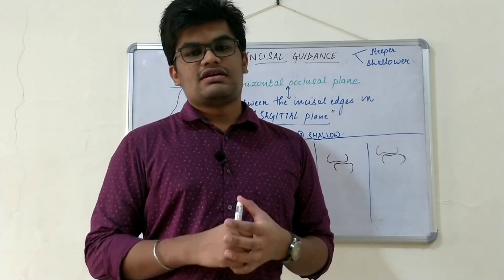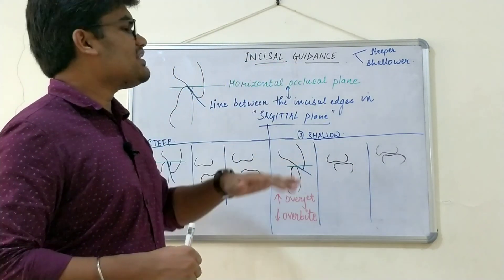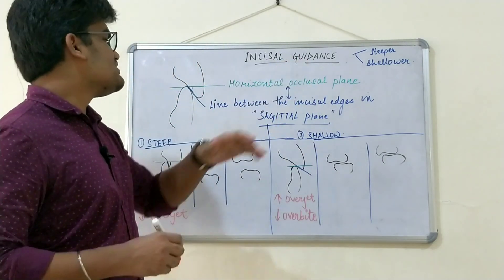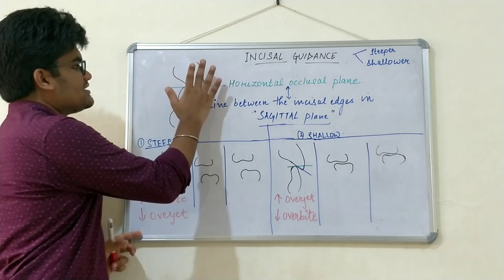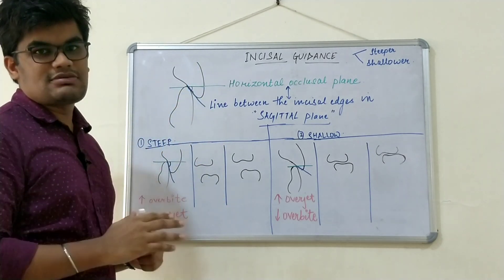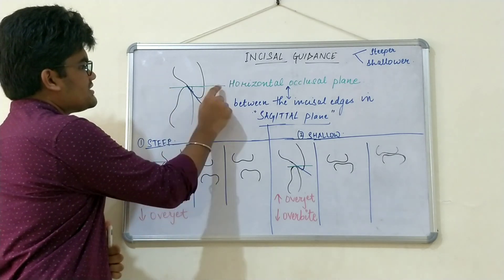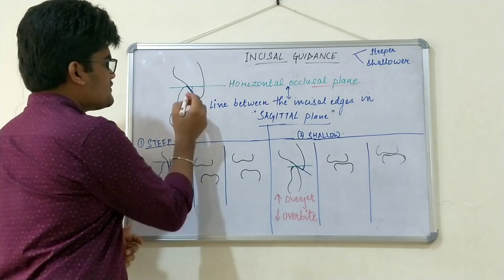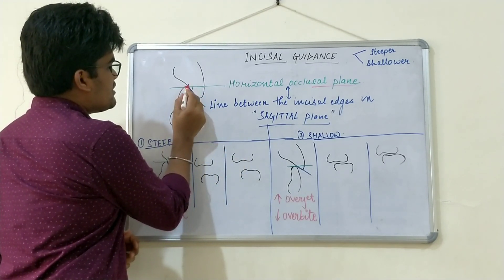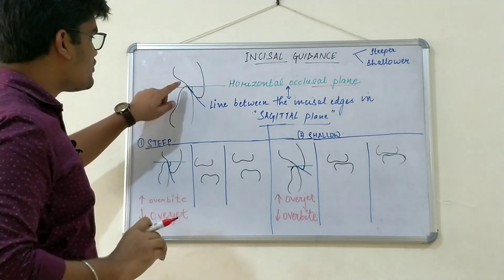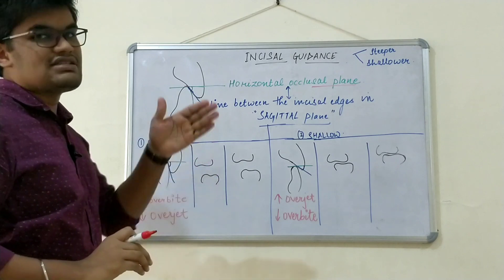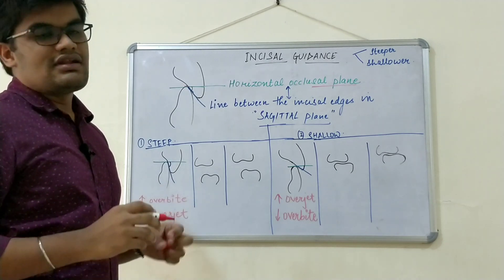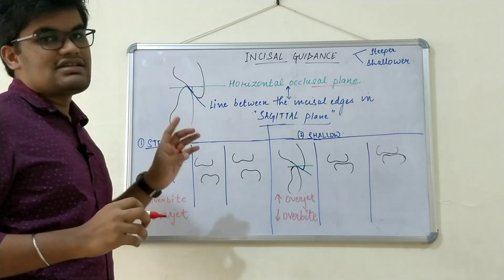Incisal guidance is another very crucial determinant of occlusion. Looking at the figure, the maxillary and mandibular incisors are shown in maximum intercuspation. The green line represents the horizontal occlusal plane, and another line is drawn joining the incisal edges of both the mandibular and maxillary incisors in the sagittal plane. The angle between these two lines is called the incisal guide angle, which is a very important determinant of anterior guidance.